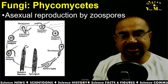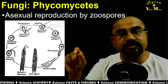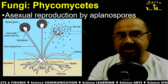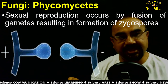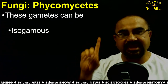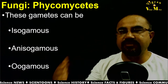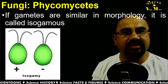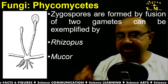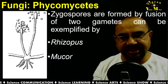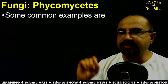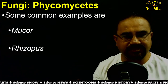Zoospores have flagella making them motile, while aplanospores are non-motile. Sexual reproduction occurs by fusion of gametes resulting in a zygospore. These gametes can be isogamous — similar in morphology — anisogamous, or oogamous. Common examples of Phycomycetes are Mucor, Rhizopus, and Albugo.